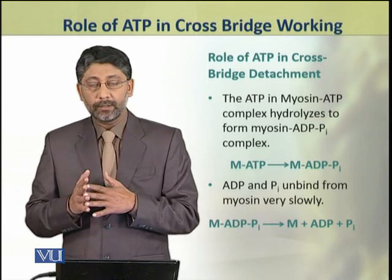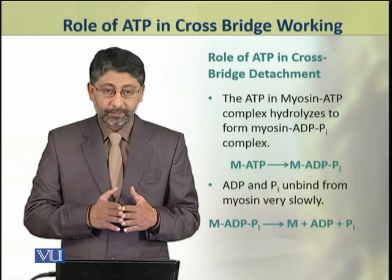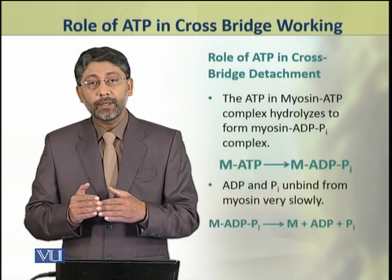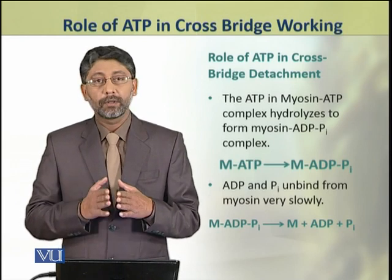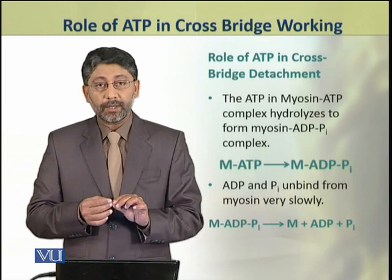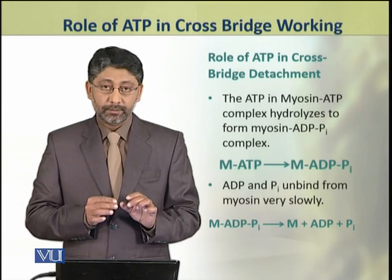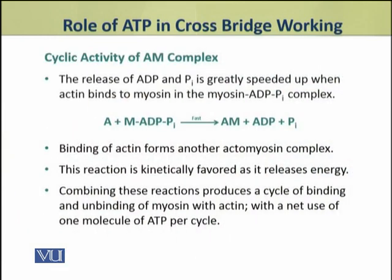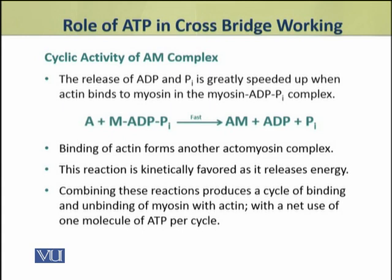The ATP in the myosin-ATP complex hydrolyzes to form a myosin-ADP inorganic phosphate complex. From this complex, the ADP and inorganic phosphate dissociate very slowly. However, the release of ADP and inorganic phosphate is greatly speeded up when actin binds to myosin in this myosin-ADP inorganic phosphate complex, and this binding of actin forms another actomyosin complex. This reaction is kinetically favored because it releases energy.